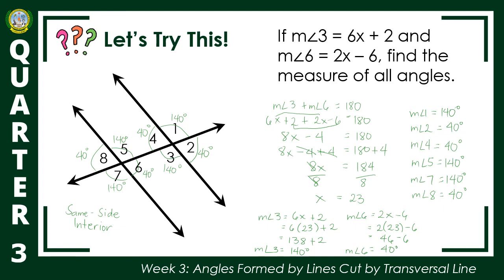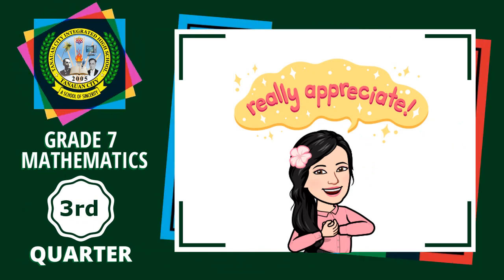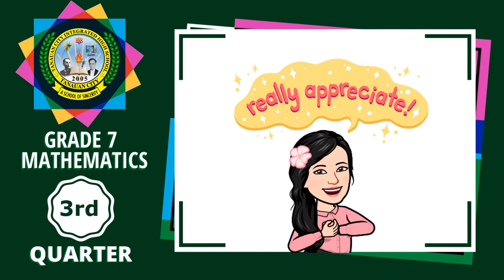To remember: when the given angles are supplementary, add the two expressions and equate their sum to 180 degrees, then solve for x, substitute, and find the remaining angles. When angles are congruent, equate them. When they are supplementary, add them and set equal to 180 degrees. That's it. Thank you for listening. This is Mom Sheila, your learning buddy in math.